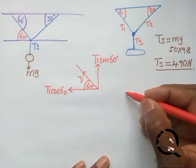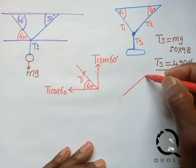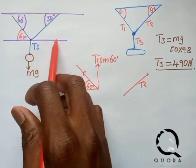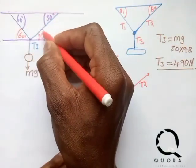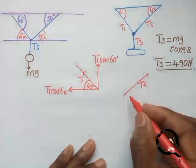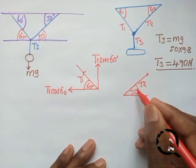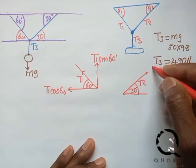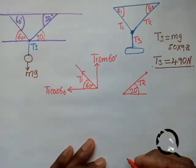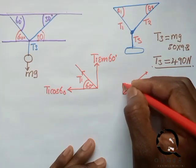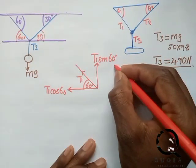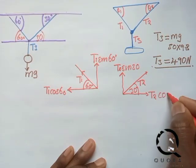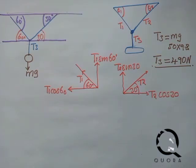Similarly for T2: it is raised at 30 degrees, so by the same reasoning the angle at the junction is also 30 degrees. Resolving T2 into components gives a horizontal component T2 cos 30 and a vertical component T2 sin 30.